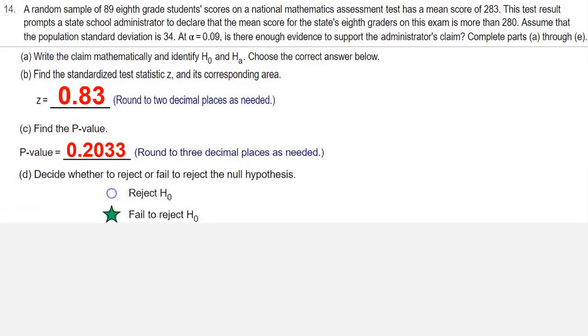Part E: interpret your decision in the context of the original claim. To do this, we have to remember that the original claim was that mu is greater than 280. Since that's an HA, and we failed to reject H-naught, when you fail to reject H-naught, that means you don't have enough evidence to support HA.